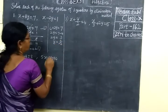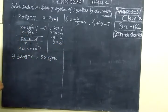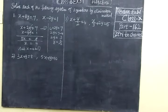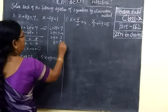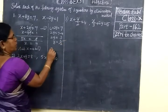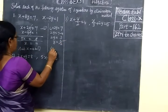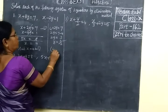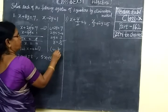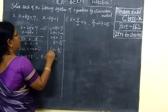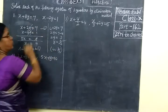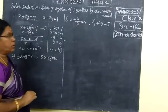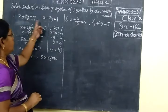Now we check the answer: x equal to 4, y equal to 3 by 2. This is correct. So the answer is (4, 3/2) for this system of equations.